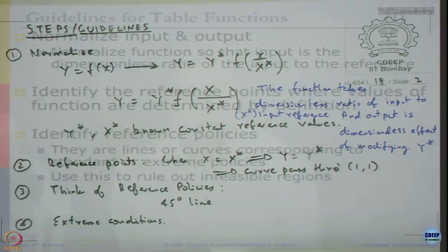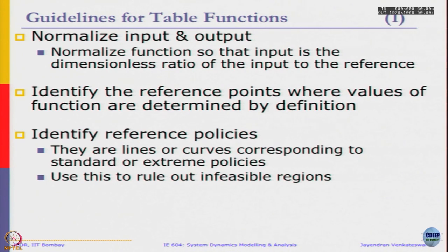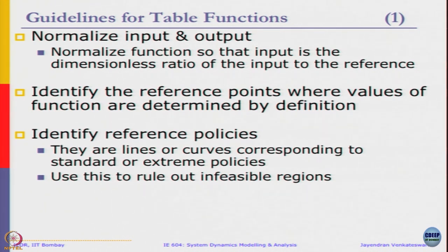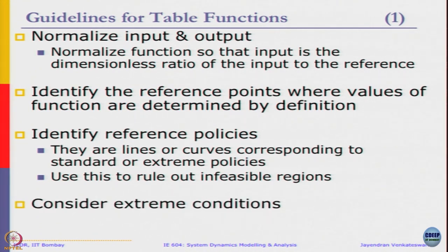Let us go back to the slides to review. Step 1 is to normalize. Step 2 is to identify reference points — values of the function determined by definition. Step 3 is to identify reference policies — lines or curves corresponding to standard or extreme behaviors. These can help identify infeasible regions. Then consider extreme conditions derived from reality, theory, or stated reasonable expectations. Any assumption you make should be based on something reasonable — supported by theory or evidence.